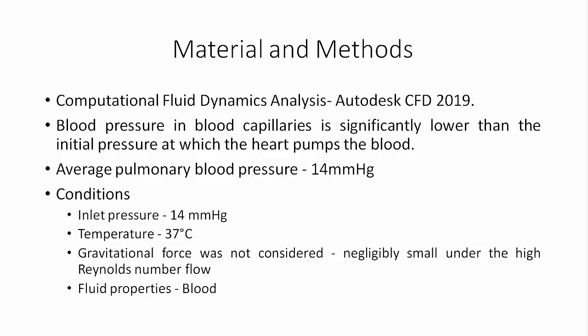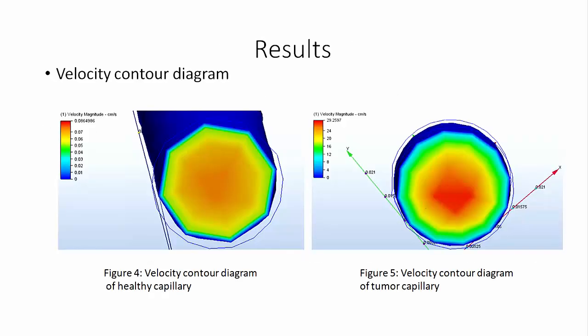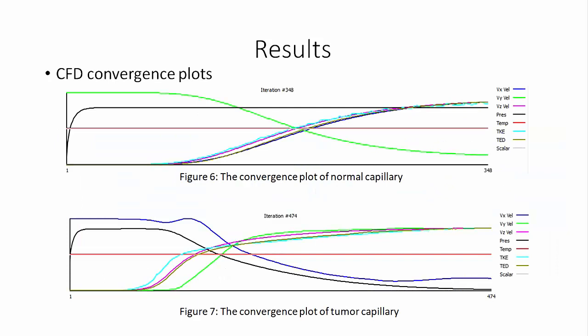We performed fluid dynamic analysis using Autodesk CFD 2019. We know blood pressure is 120/80, but in a capillary the average pulmonary blood pressure is 14 mmHg. The inlet pressure used was 14 mmHg and body temperature was 37 degrees centigrade, with blood fluid properties from the software. After the CFD analysis, we found that velocity was higher in the tumor capillary, and pressure decreased drastically in the tumor capillary while remaining relatively constant in the normal capillary.